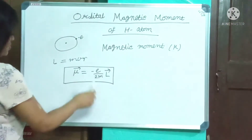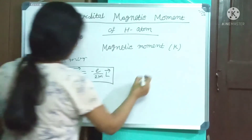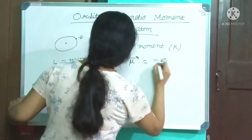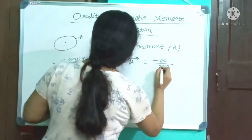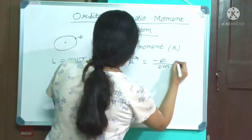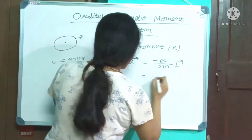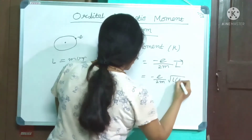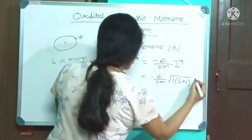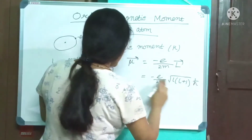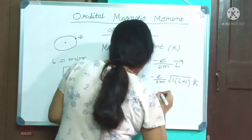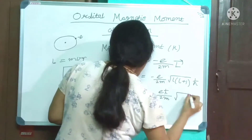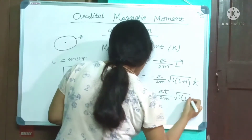So μ equals minus e/2m × L. If we substitute the quantum mechanical value for L, we get μ equals minus e/2m × √(L(L+1)) × ħ, which equals minus eħ/2m × √(L(L+1)).